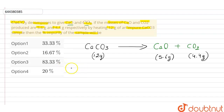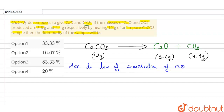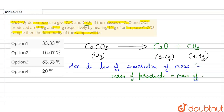So now I will use the law of conservation of mass here. According to the law of conservation of mass, the mass of products is always equal to the mass of reactants. Here, the product mass is 5.6 plus 4.4 grams, and the mass of reactant is...